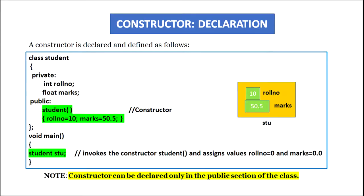A constructor is declared and defined as follows. We take an example of a class student with private data members roll number and marks. In the public section we define a constructor with the same name as the class followed by parenthesis. The body contains initialization statements: we assign the value 10 to roll number and 50.5 to marks. In main, when we create the object using the statement student S2, memory is allocated to the data members and the constructor is invoked automatically, assigning 10 to roll number and 50.5 to marks.